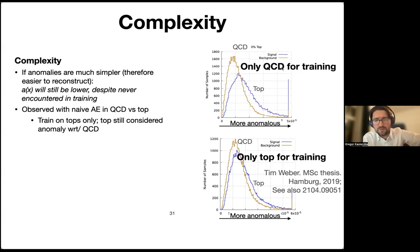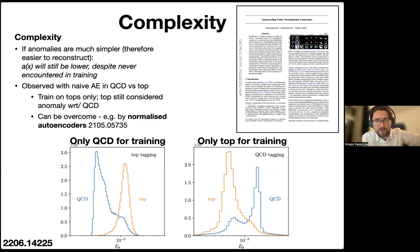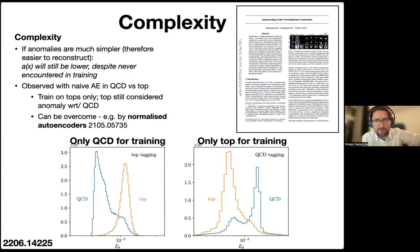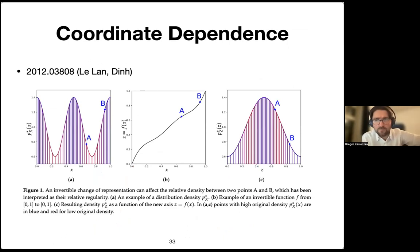Top quarks are much busier than light quark or gluon jets — in an image representation, many more pixels are non-zero. If we flip the setup and train only on top quark jets, then test whether QCD is found as an anomaly, a simple image-based autoencoder fails this test: the top is still on the right-hand tail even when it shouldn't be. This motivates normalized autoencoders, which add a penalty term for outliers during training, learning a closer approximation of the background distribution.